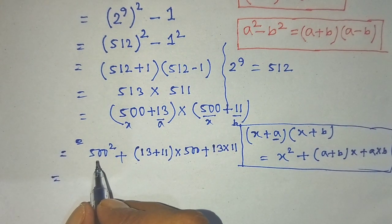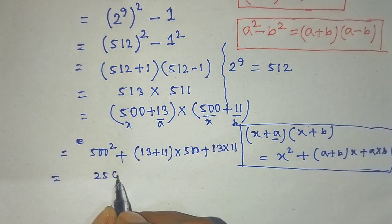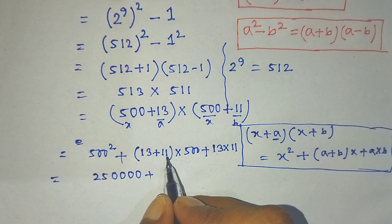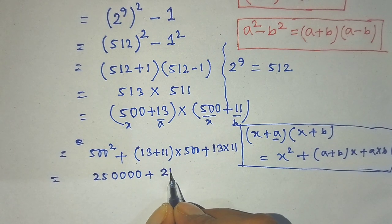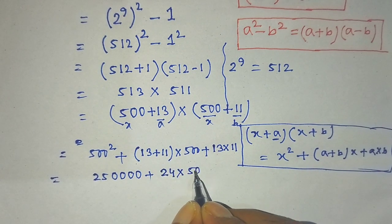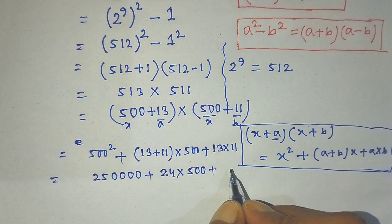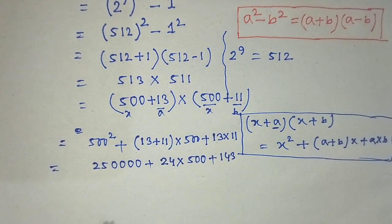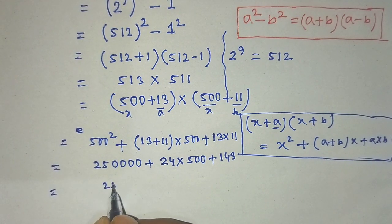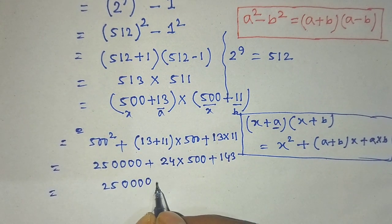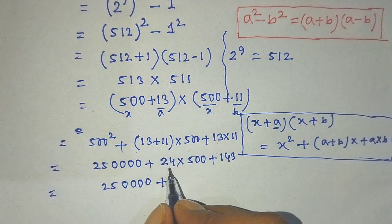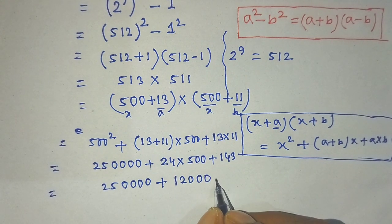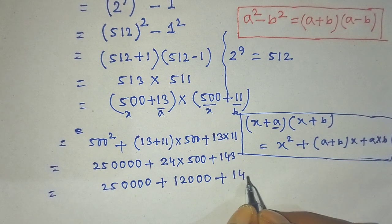The square of 500 is 250000. Then 13 plus 11 is 24, so 24 into 500 gives 12000. And 13 into 11 gives 143. So we have 250000 plus 12000 plus 143.